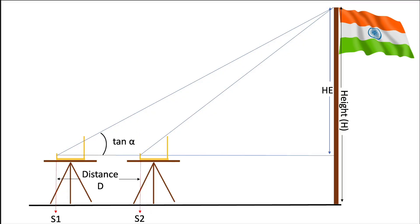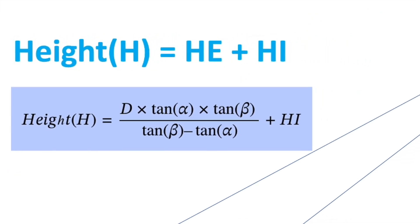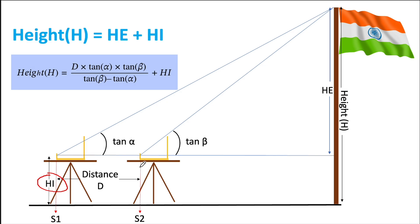This gives us the values of tan α and tan β. Again, the height of the object equals he plus hi, where hi can be measured.